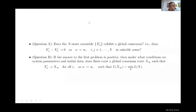We ask two questions. First: does this N-particle ensemble exhibit global consensus — do particles i and j converge to one point as the iteration step goes to infinity? Second: if yes, under what conditions on system parameters and initial data does a global consensus x_infinity exist, and do all particles converge to the neighborhood of the global minimum?